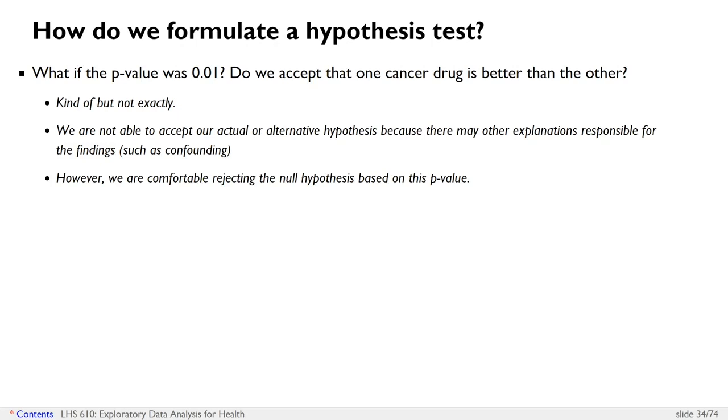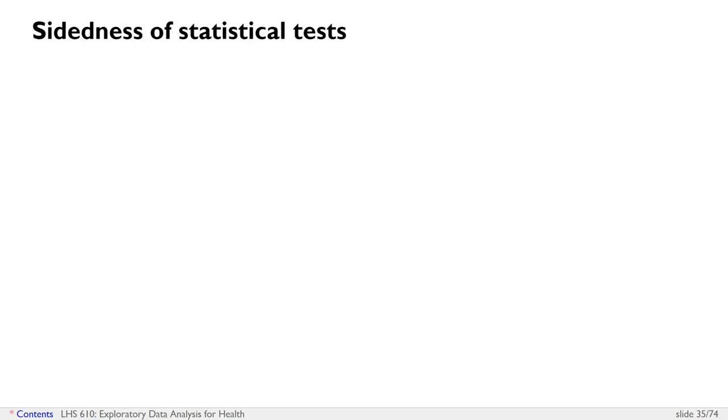So we're comfortable rejecting the null hypothesis based on this p-value because we set our threshold at 5% or 0.05, but we can't accept our actual or our alternative hypothesis because other explanations may be possible. And remember that our null hypothesis here was that there's no difference in the two drugs. And so that's what we're rejecting here based on that p-value.